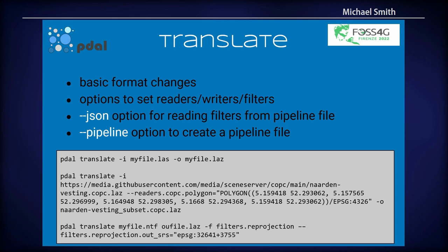Poodle Translate is your basic translation capability, although you can pass filters to Poodle Translate — so it's kind of a command line version of the pipelines. You can actually generate a pipeline from a Translate command line or read filters from a JSON file. Basically Poodle Translate is input file, output file. Here's an example reading directly from an online location, setting the boundary to a certain extent, and writing it out to a new dataset. You can even add filters and reprojection on the fly from the command line.